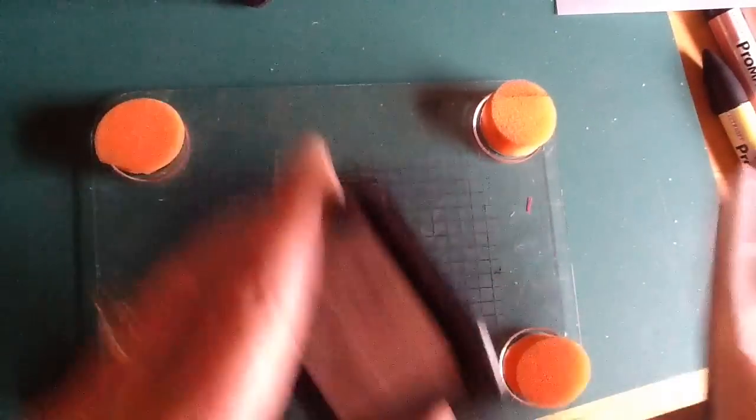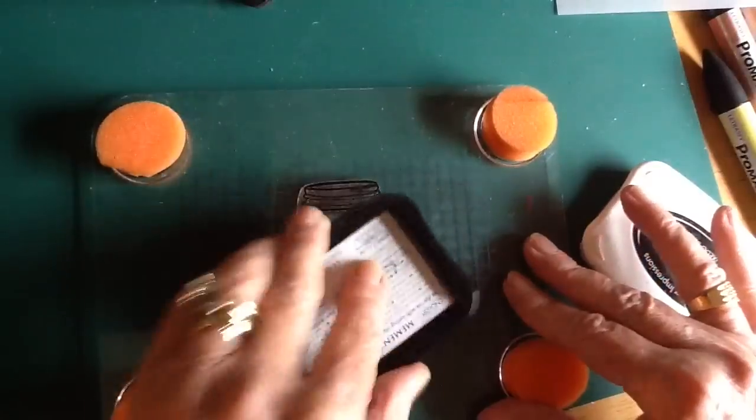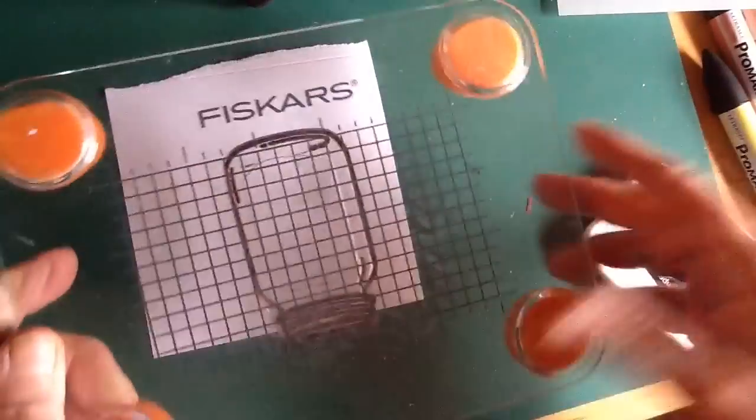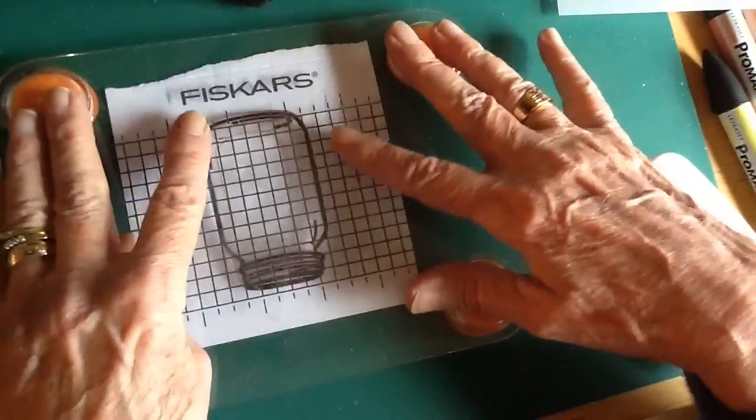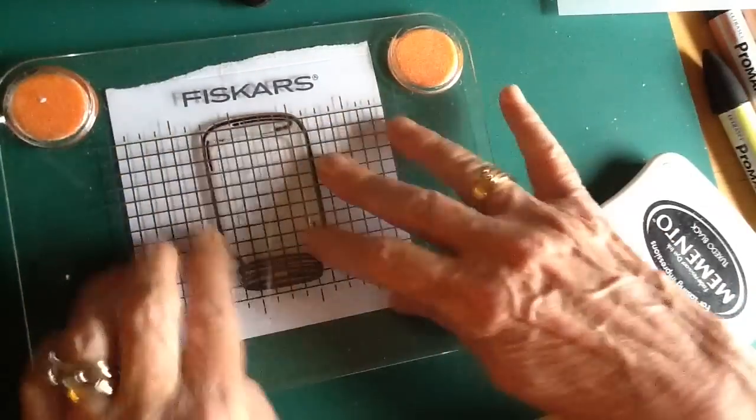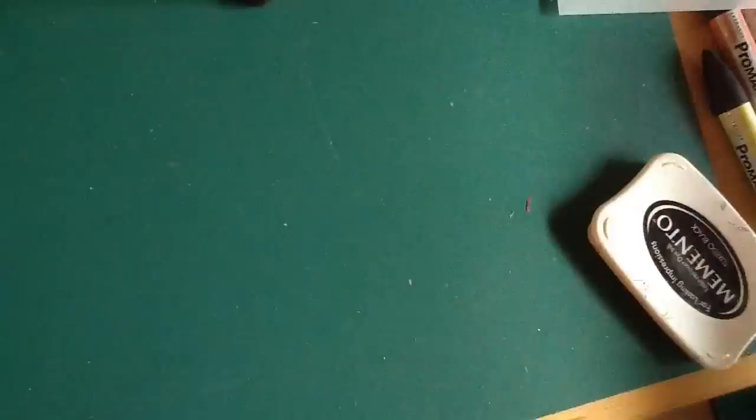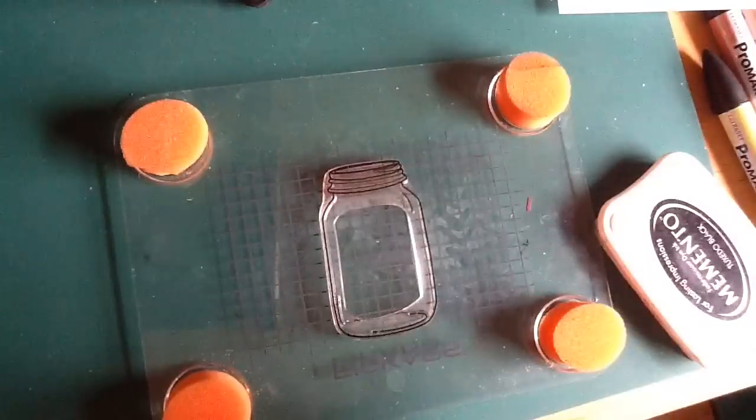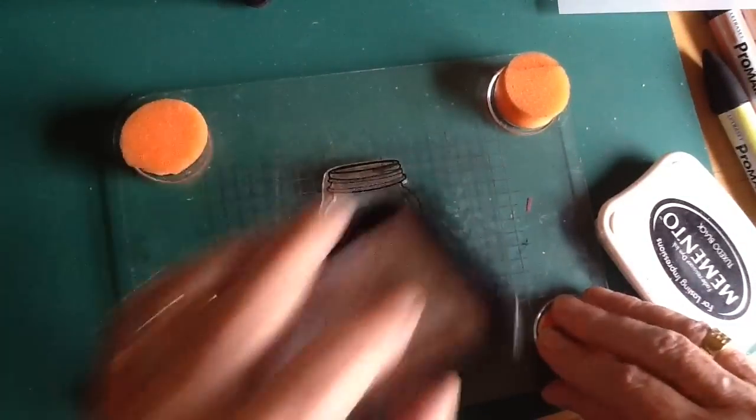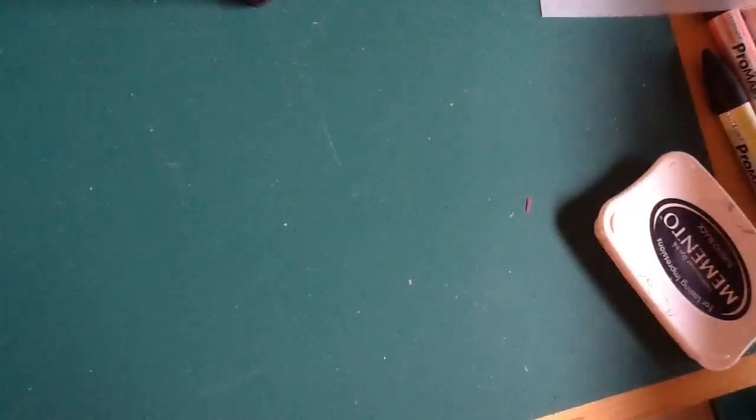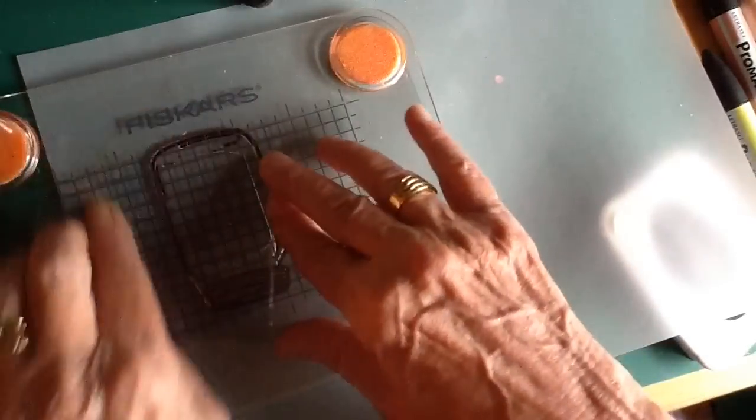I love this press because it's got a grid line on it so you can make sure that your stamp is actually on straight. I'm going to stamp it twice, once onto white cardstock with the Tuxedo Black Memento ink and then again on vellum, and I'm going to go away and cut these out.